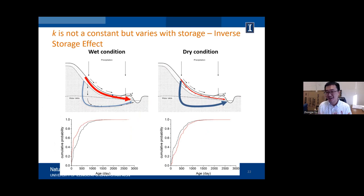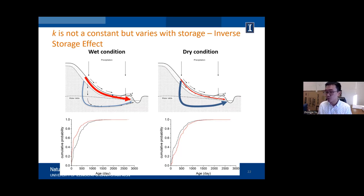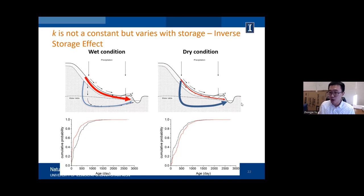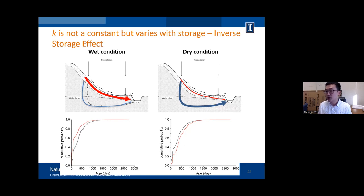An important point is that this K value is not constant but can be variable. During a precipitation event arriving at a very wet watershed, shallow near-surface flow paths are activated, contributing a lot of young water to discharge. But the same event arriving during dry conditions infiltrates deeper, contributing older water. So K is a function of the wetness degree or storage of the system. Many studies have found an inverse storage effect: when the system is wet and has large storage, it tends to select young water as discharge; when storage is low, old water preference dominates.